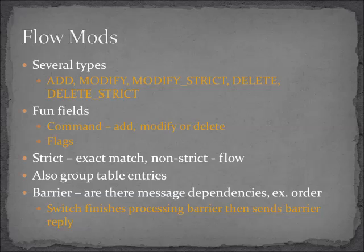Let's talk about flow mods. As mentioned, we can add, modify, or delete. There's also a modify strict and a delete strict — the difference is between modifying a flow table entry that's an exact match (strict) versus one that matches the general category. For example, matching all packets with an IP address beginning with 224 wouldn't be a strict match. There's a flow table for unicast flows, but also group table entries — you can add, modify, or delete entries for groups as well.